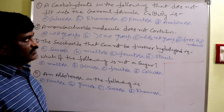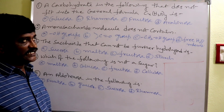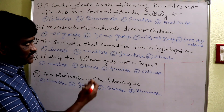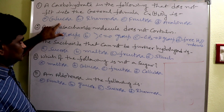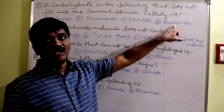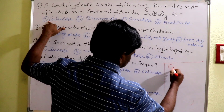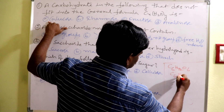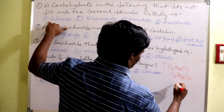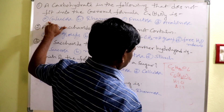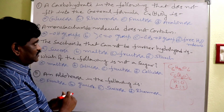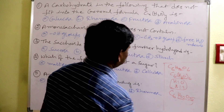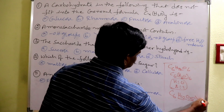Carbohydrates that do not fit into the general formula CₓH₂ₒᵧ: initially, carbohydrates were considered as hydrates of carbon with the general formula CₓH₂ₒᵧ. For example, glucose C₆H₁₂O₆ — hydrogen and oxygen ratio is 2:1, so this formula fits. But rhamnose has the formula C₆H₁₂O₅ — hydrogen and oxygen ratio is still 2:1, so this formula fits too. Rhamnose does not fit the general CₓH₂ₒᵧ formula.